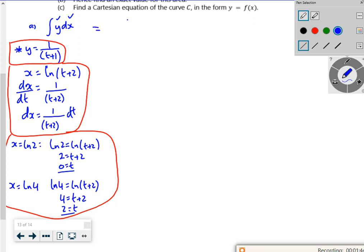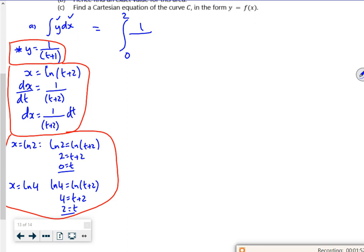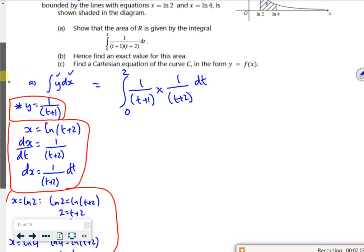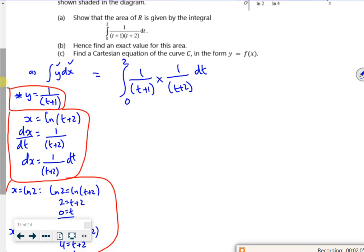So that will become an integral from 0 to 2. y is 1 over t plus 1, dx is 1 over t plus 2 dt. There. Look, see? Perfect. That's exactly it. Right, so that's part A done. Lovely.